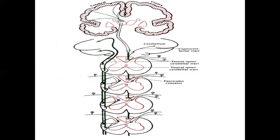This diagram shows some of the important tracts carrying proprioceptive sensations: the ventral or anterior spinocerebellar tract, the dorsal or posterior spinocerebellar tract carrying information from the spinal cord to the cerebellum, and the cuneocerebellar tract. These are the important tracts which carry the proprioceptive sensations.